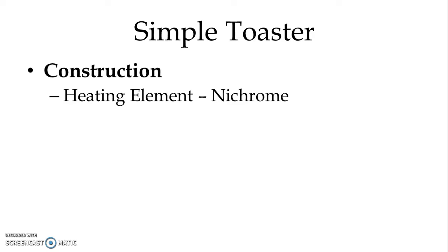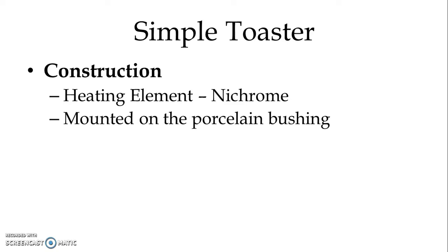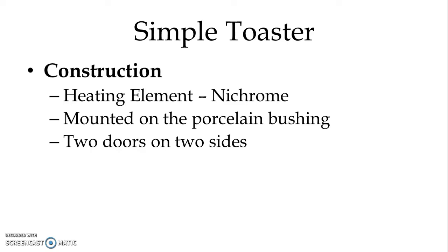We know that nichrome has very high resistivity. The heating element is mounted on the porcelain bushing, and on both sides of the heating element we can house the slice of bread, and then we can close the door. We can switch on the toaster, and in most toasters we have two pilot lamps.